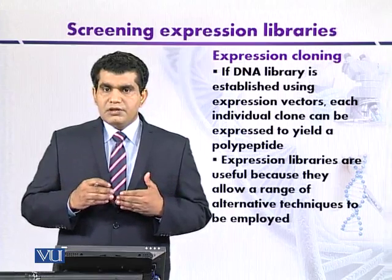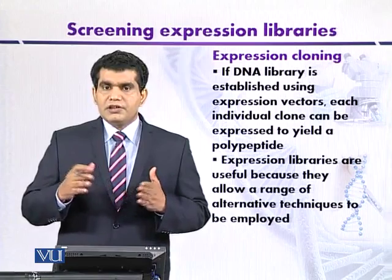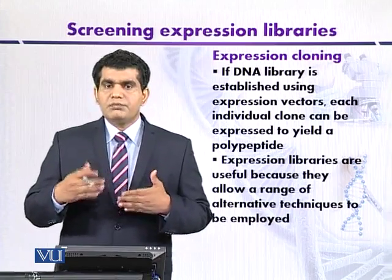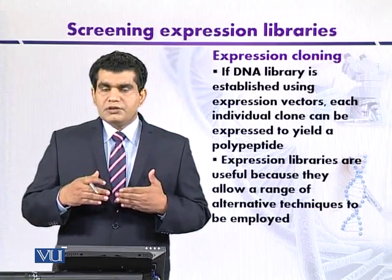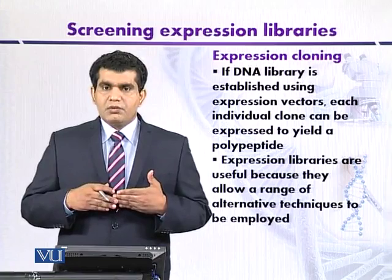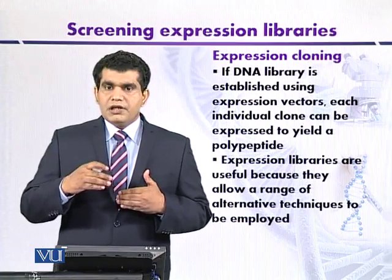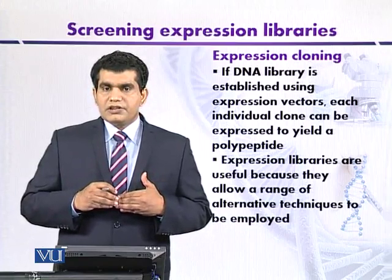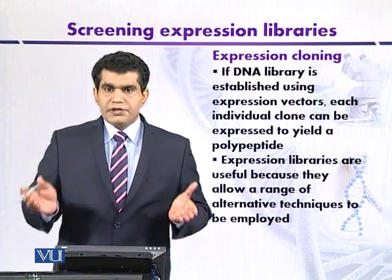This problem can be avoided if the fragment size of the target gene is controlled so that it is comparatively smaller, and it is inserted into the expression vector in all possible combinations and orientations. This ensures a reasonable number of recombinant clones, and the translation may occur in all possible reading frames.